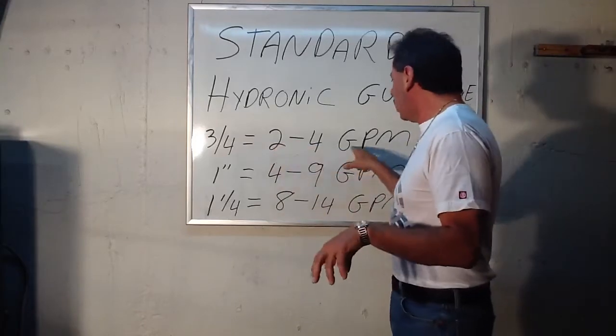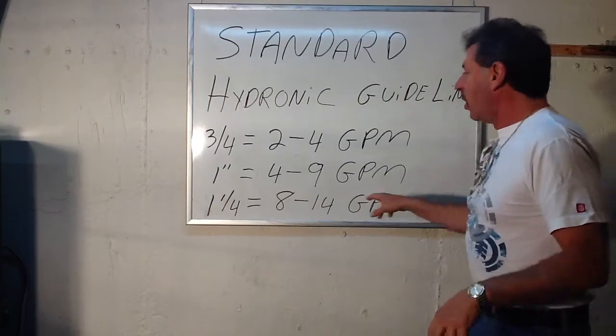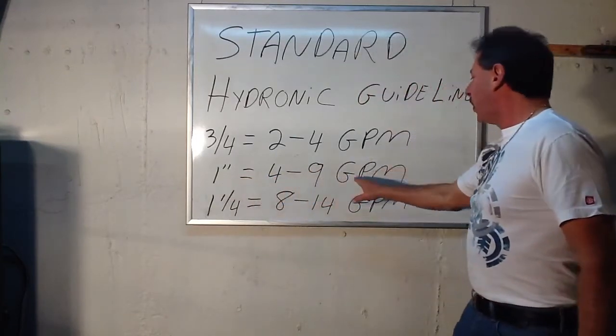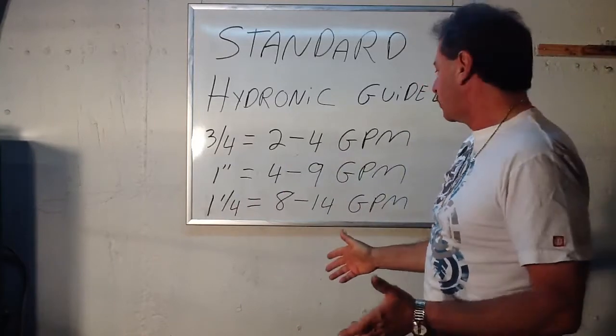But that's normal for baseboard. If you're doing a larger system, just so you know the guidelines, one inch will give you four to nine gallons per minute, a flow rate of between four and nine gallons per minute.